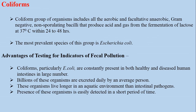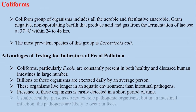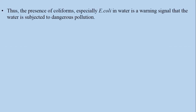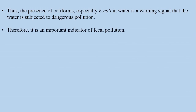The presence of these organisms can be easily detected in a short period of time, in contrast to the time-consuming identification of specific pathogens. Consequently, the potential consumer of fecally polluted water may be warned within 24 hours, preventing further exposure to possible infection. A healthy person would not normally excrete pathogenic organisms, but if an intestinal tract infection develops, the pathogen is likely to occur. Therefore, the presence of coliforms, especially E. coli in water, is regarded as a warning signal that the water is subjected to dangerous pollution, making it an important indicator of fecal pollution.